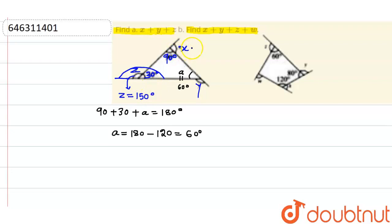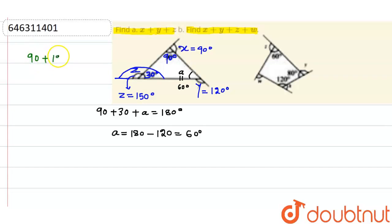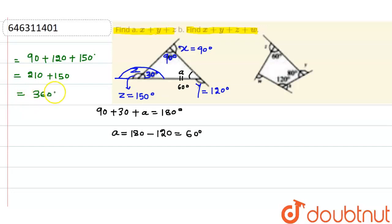Similarly, this angle must also total 180 degrees, so that is 180 minus 90, which is 90 degrees. And since A is equal to 60 degrees, Y will be 180 minus 60, that is 120 degrees. To find X plus Y plus Z: X is 90, Y is 120, and Z is 150. So 90 plus 120 is 210, and 210 plus 150 is 360 degrees.